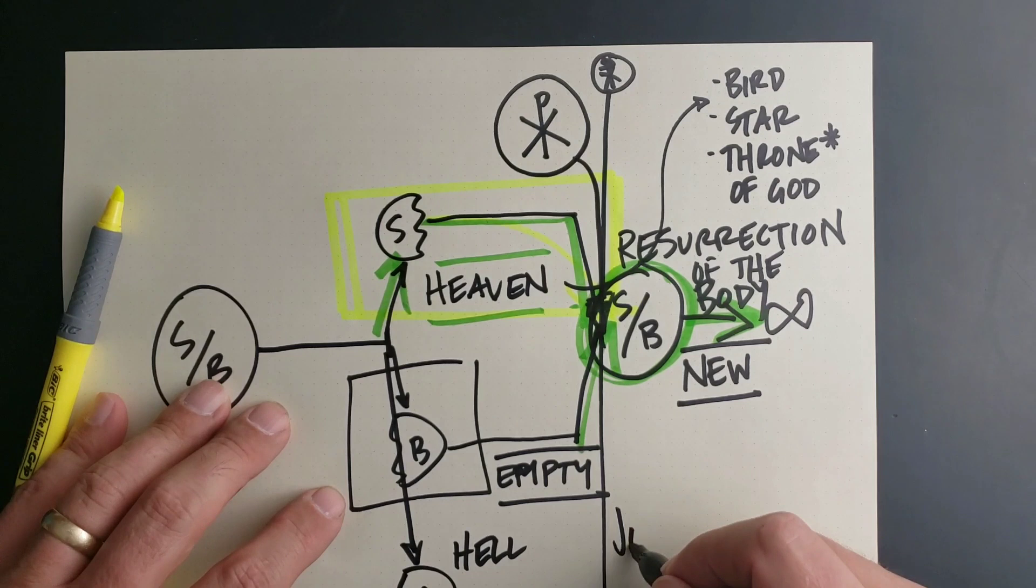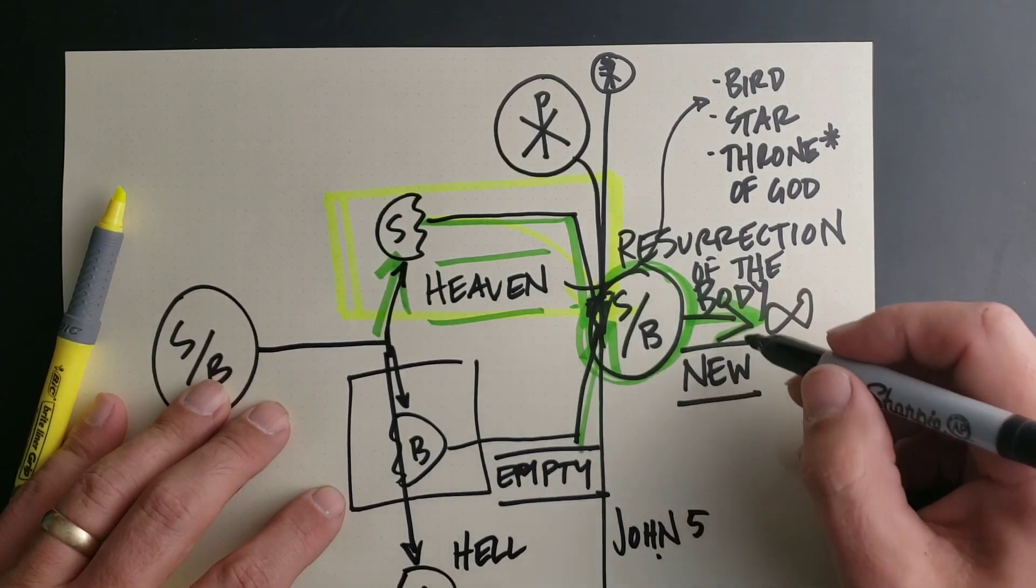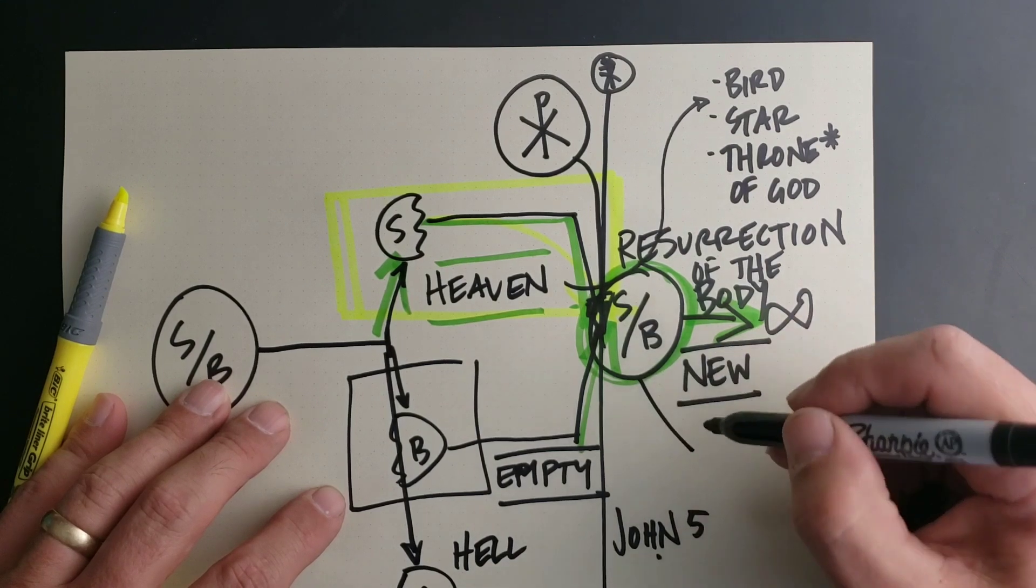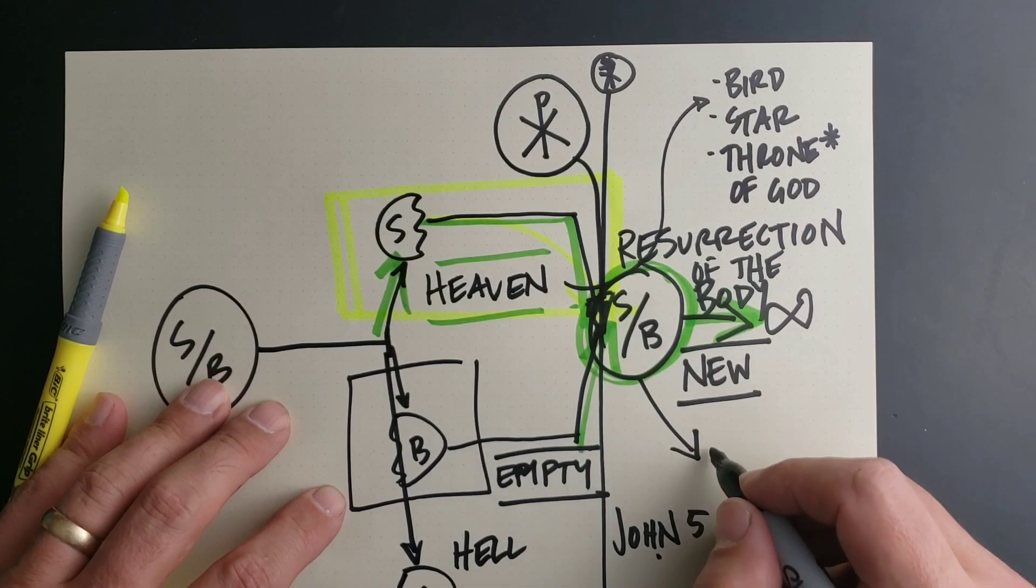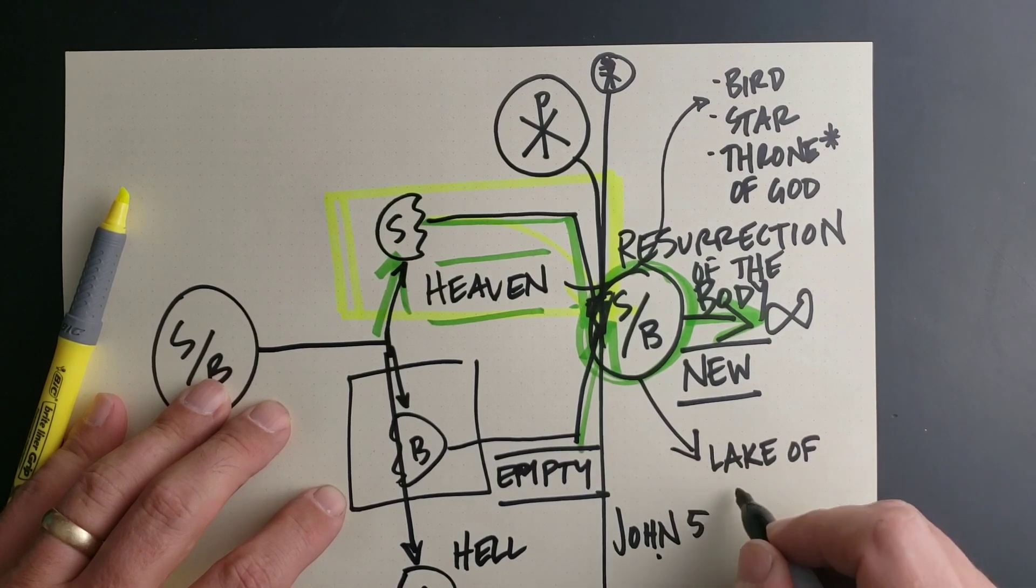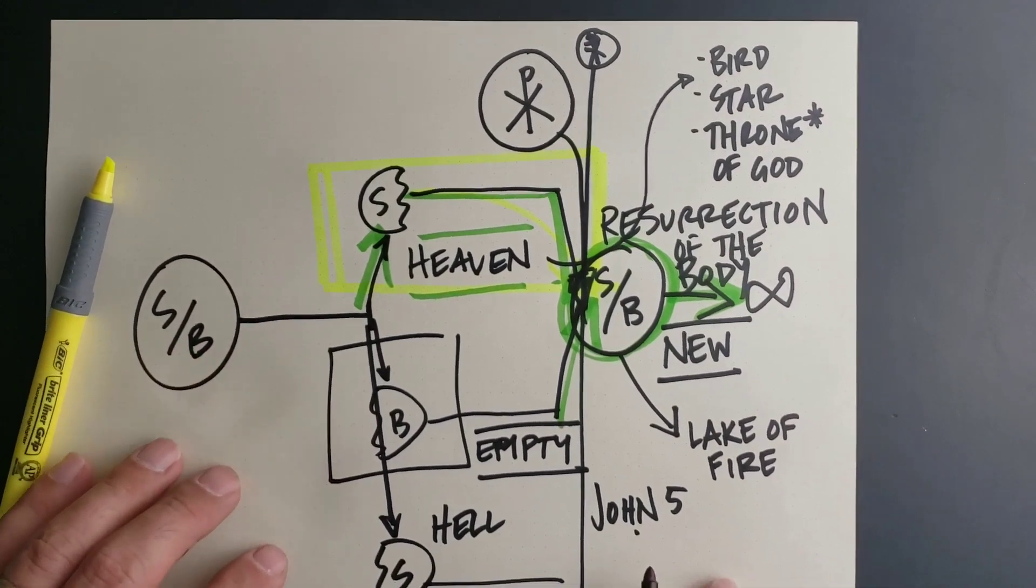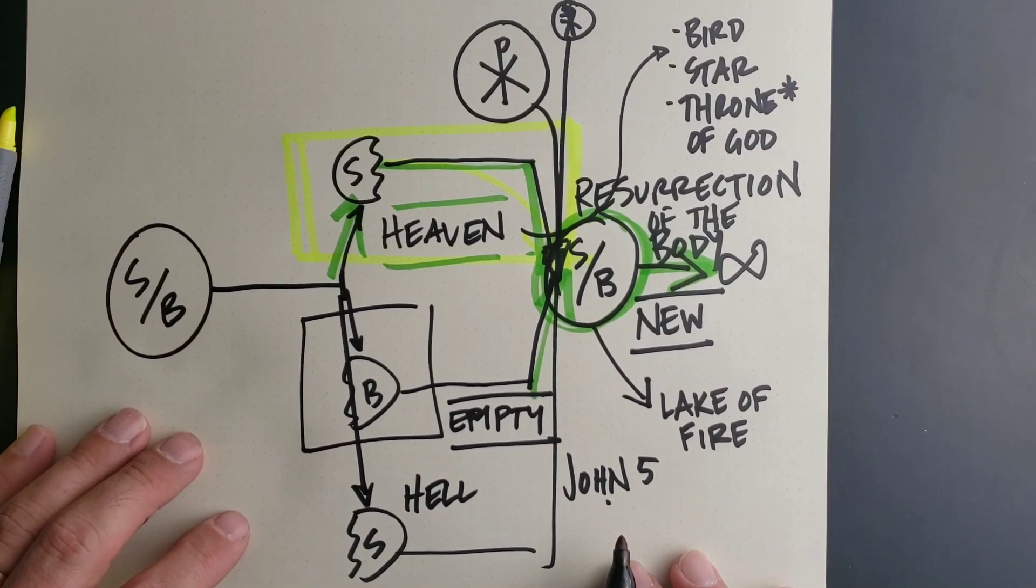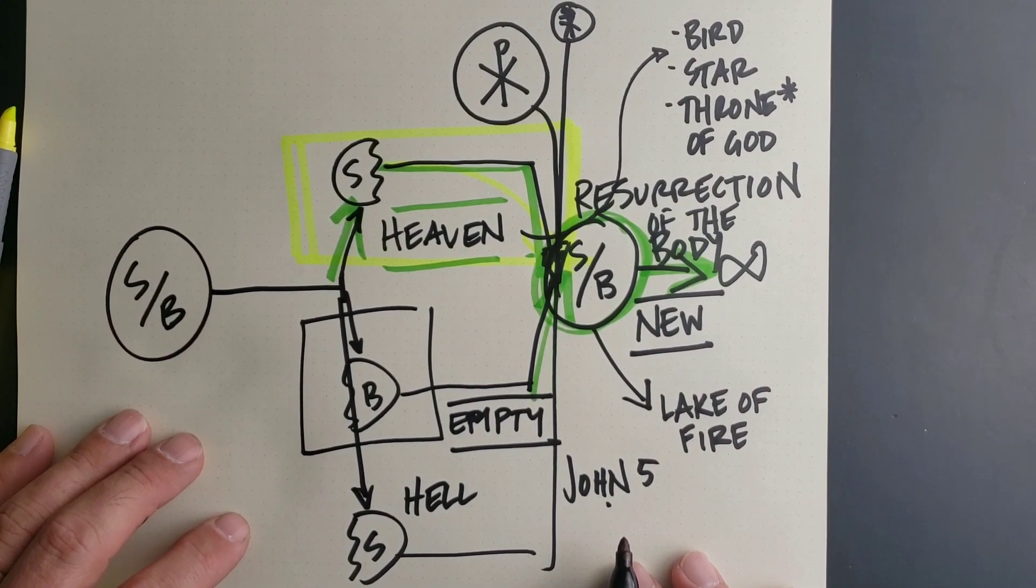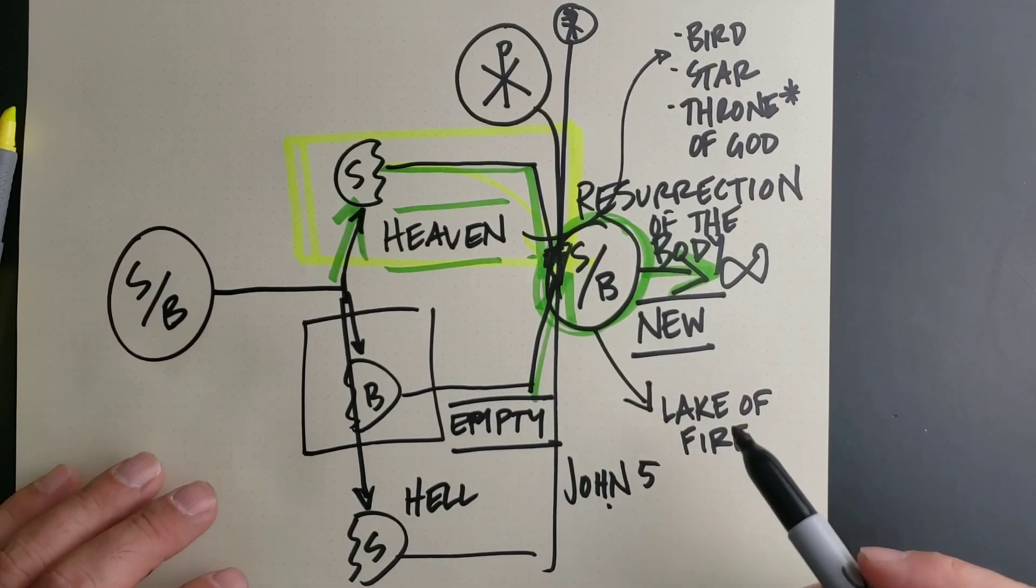Remember, John 5, Jesus talks about the resurrection to life and the resurrection to death. But instead of living before the Lord in the new heaven and the new earth, the place that the Bible speaks of here is called the lake of fire. It's the eternal destruction of those who fight the Lord and his mercy and want to live apart from him. Those who are condemned because of their unbelief and because of their sin. So there is a resurrection even to destruction, which the Bible teaches as well.